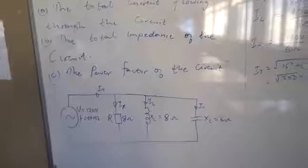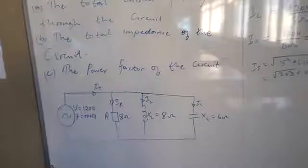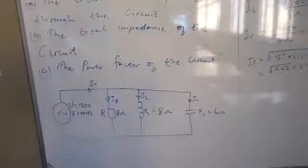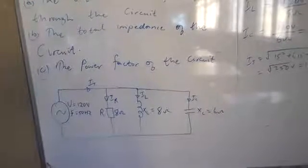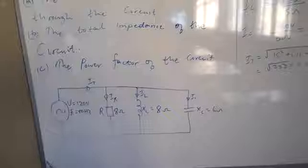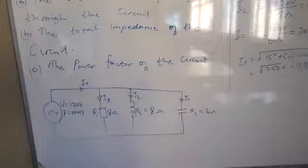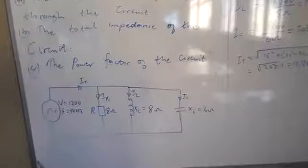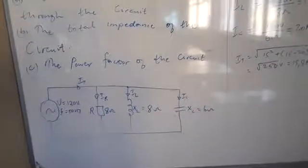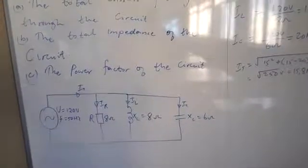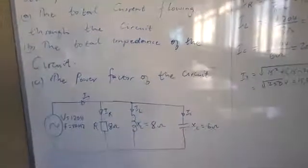As you can see there, we've got the resistance of 8 ohms, the inductive reactance XL - remember it's not the inductance, that is the inductive reactance XL of 8 ohm, and the capacitive reactance XC of 6 ohm. Remember, XC is 1 over 2πFC and XL is 2πFL. Now we're given the reactances there, so we must calculate IT.